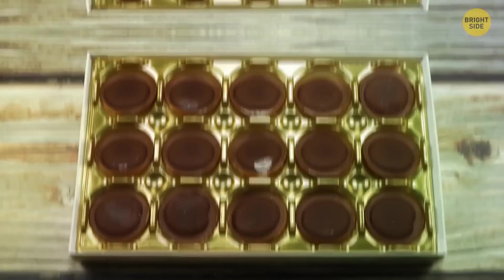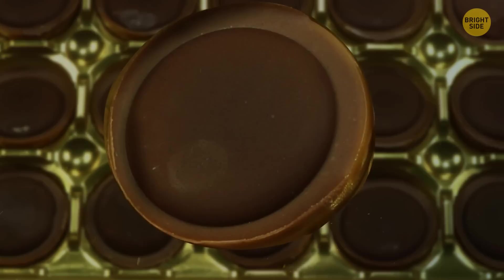Those tiny holes in the chocolate box tray actually serve a function. Push the hole near the candy and it'll pop straight out with you having to get your hands dirty. How thoughtful!